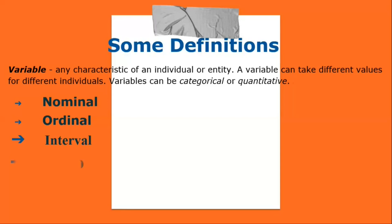Ratio: variables with all properties of interval plus an absolute, non-arbitrary zero point — e.g., age, weight, temperature in Kelvin. Addition, subtraction, multiplication, and division are all meaningful operations.